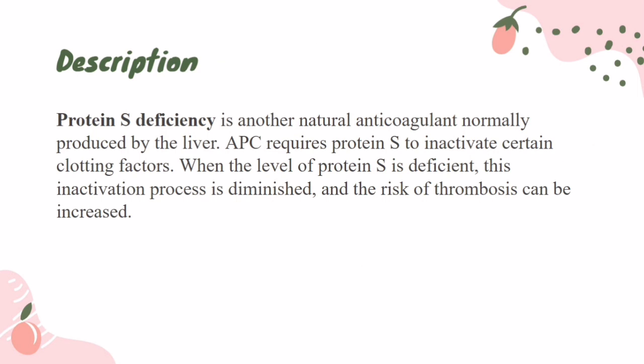Protein S deficiency is another natural anticoagulant normally produced by the liver. APC requires protein S to inactivate certain clotting factors. When the level of protein S is deficient, this inactivation process is diminished and the risk of thrombosis can be increased.